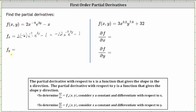To find the partial of f with respect to y, we now treat x as a constant and differentiate with respect to y. The derivative of 2x^(-6) * e^(3y) with respect to y: we treat 2x^(-6) as a constant, then take the derivative of e^(3y) with respect to y, which requires a chain rule. The derivative is e to the power of 3y, times the derivative of 3y with respect to y, which gives us times three. Then minus the derivative of x with respect to y, which is zero, because we treat x as a constant.